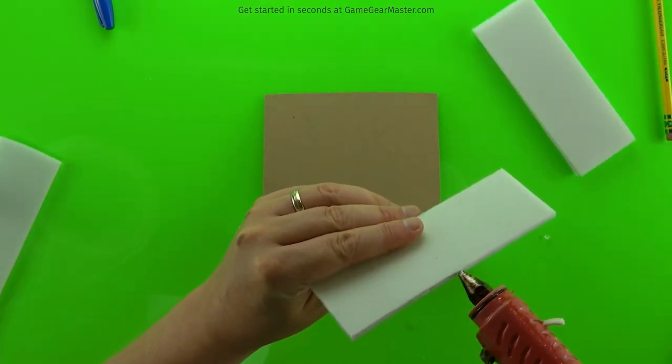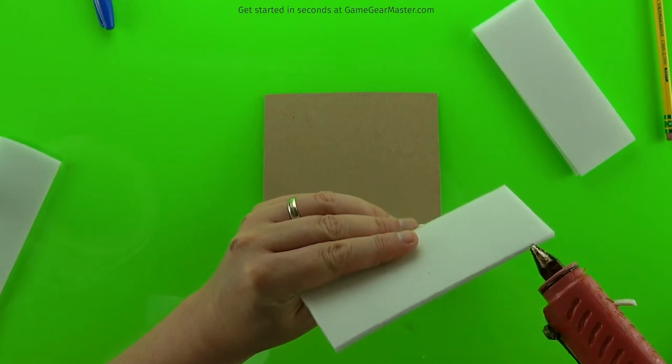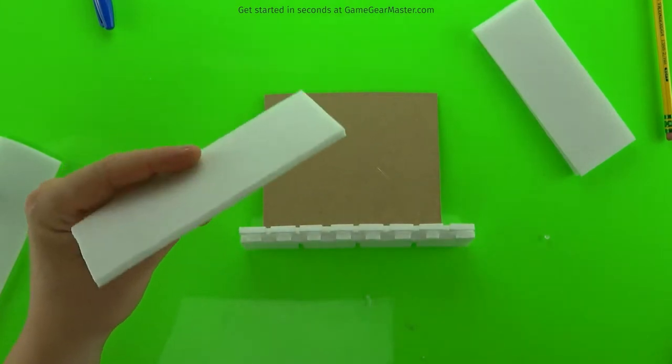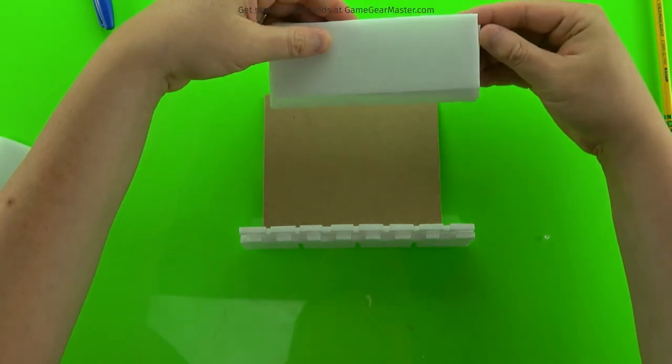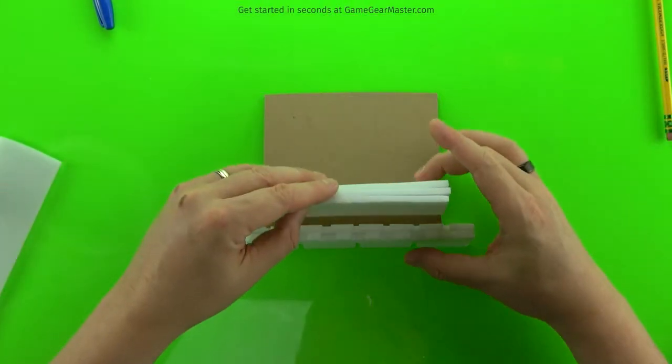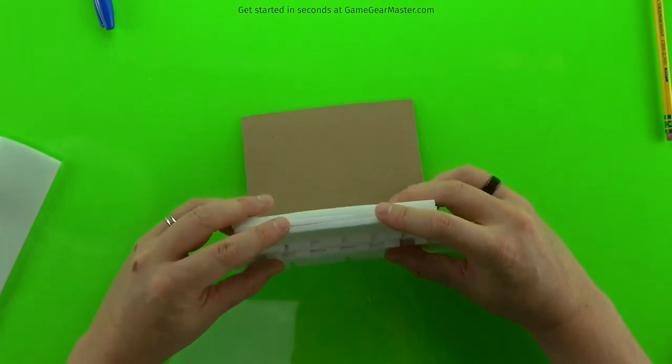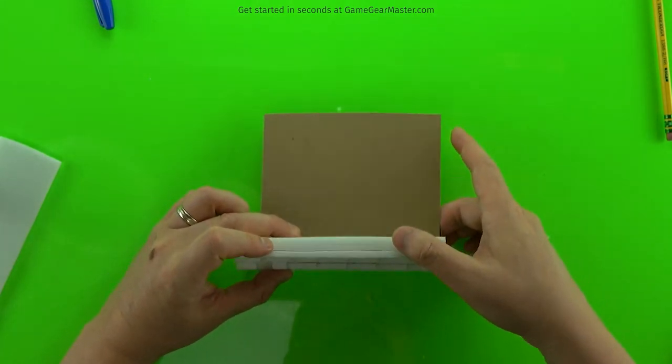And then we're going to stack those two other sheets of foam board on top of it as spacers. And then we're going to put that entire bundle onto the cardboard with those two spacers right up against the back of the crenellation. Just like that.